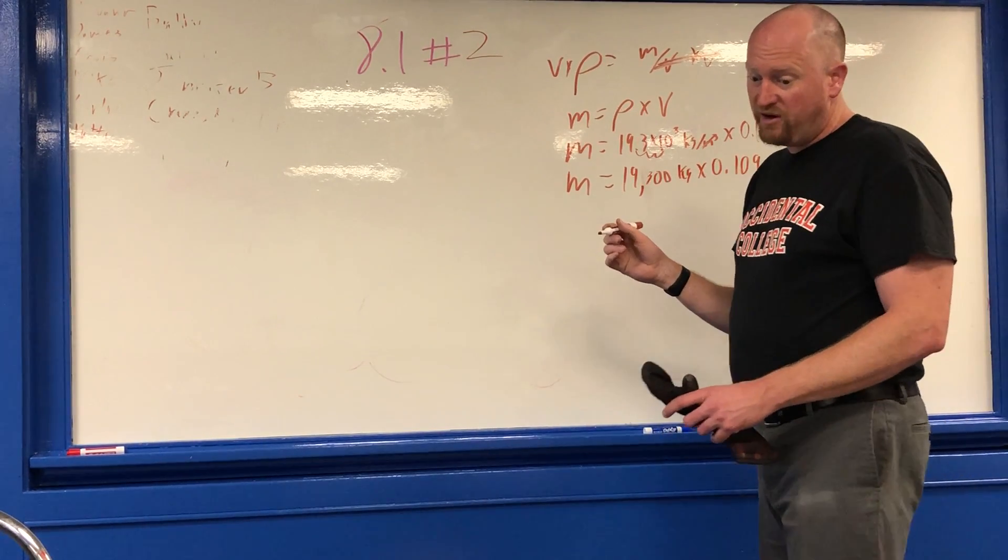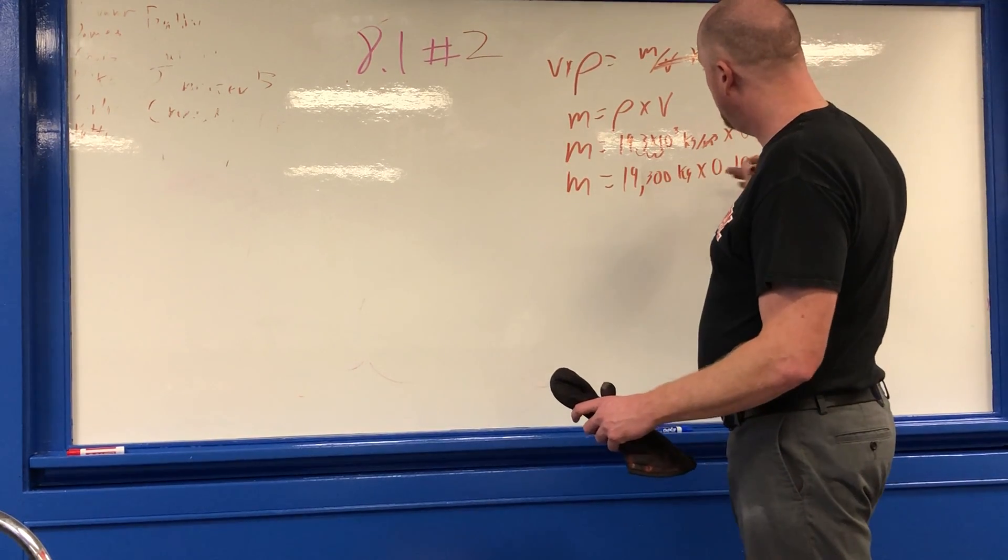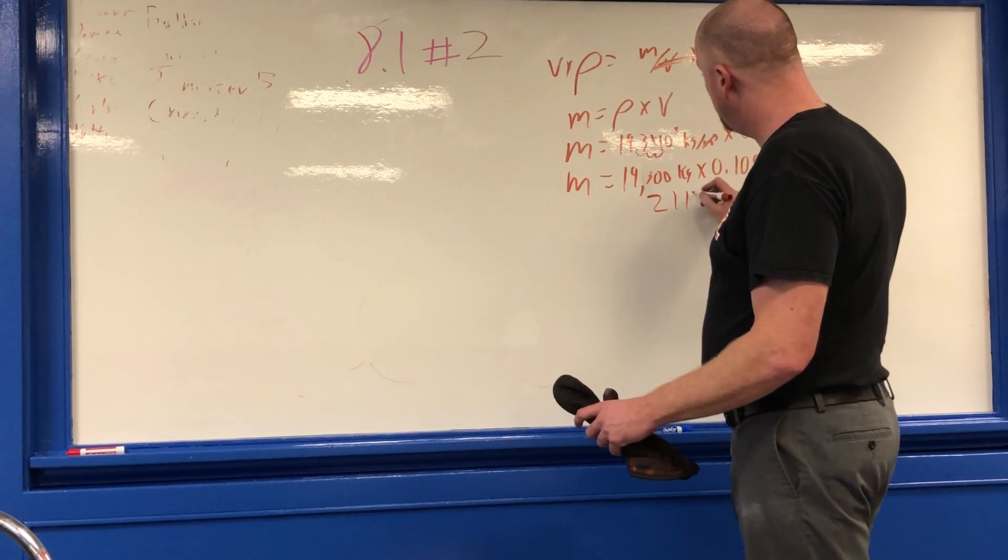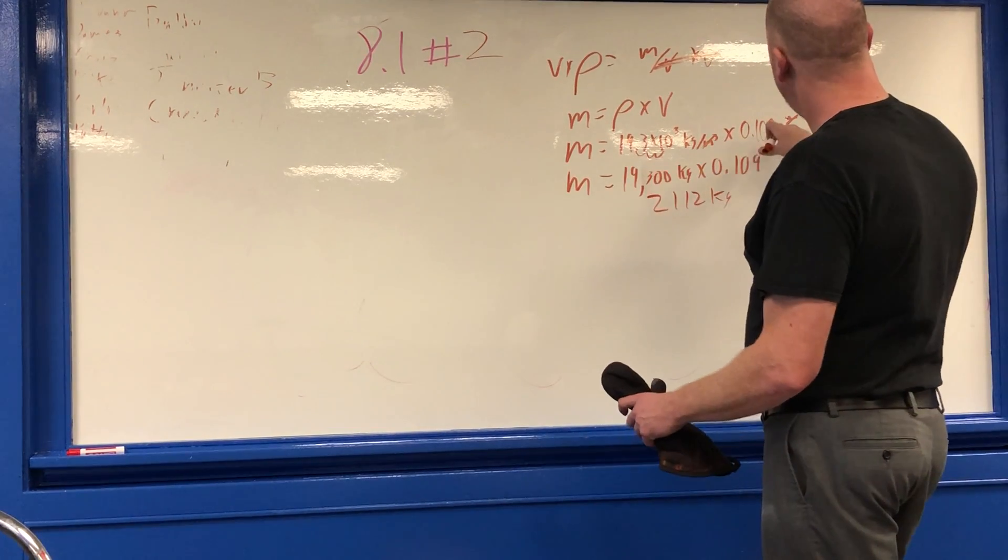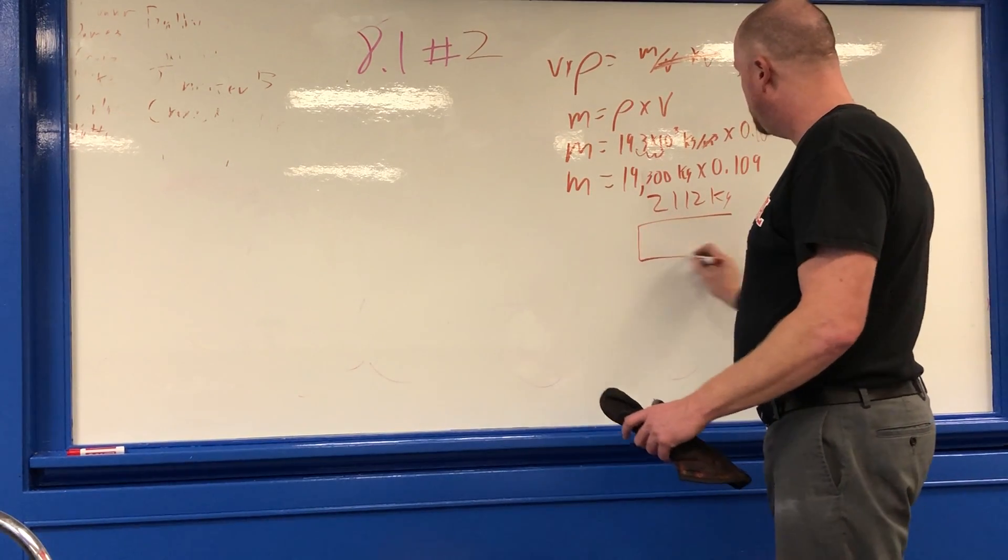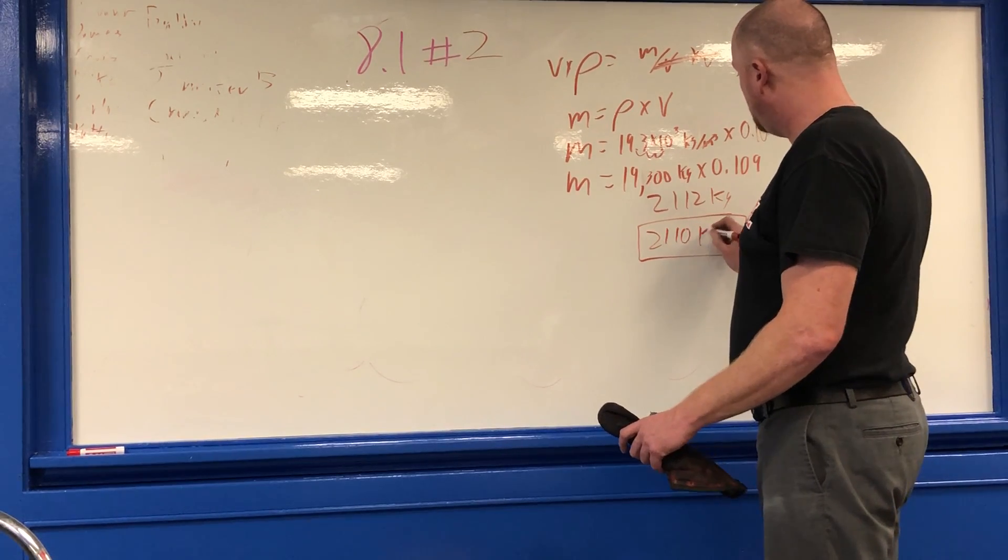And if I multiply it all together, I end up getting 2,112 kilograms. Now, three sig figs—we need to round to three sig figs—so our answer is going to be officially 2,110 kilograms.